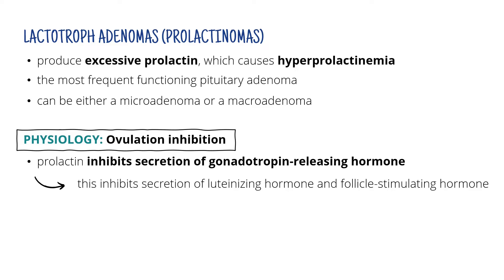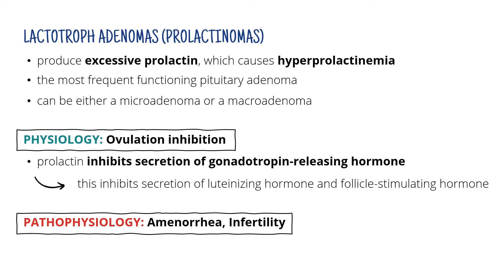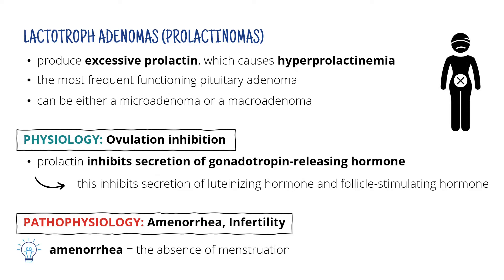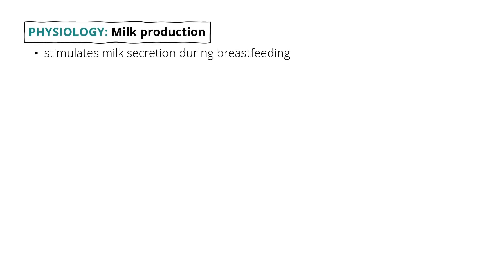So what could happen? Women are going to suffer from amenorrhea — the absence of menstruation — or even infertility. Remember, no luteinizing and follicle stimulating hormone means no oocytes. Another thing prolactin is responsible for is milk production, and it stimulates milk secretion during breastfeeding.